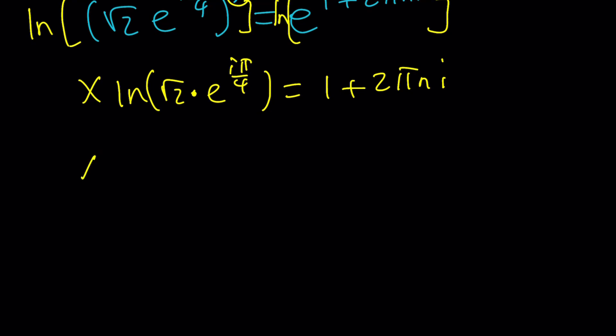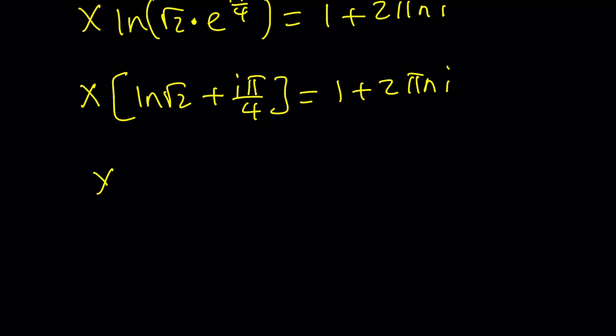And eventually you're going to divide by this and you'll get the answer. But let's go ahead and separate these. ln(√2) + ln(e^(iπ/4)). That's going to be the same power. And this is going to be simplified a little bit. Now let's go ahead and divide: (1 + 2πni)/(ln√2 + iπ/4).